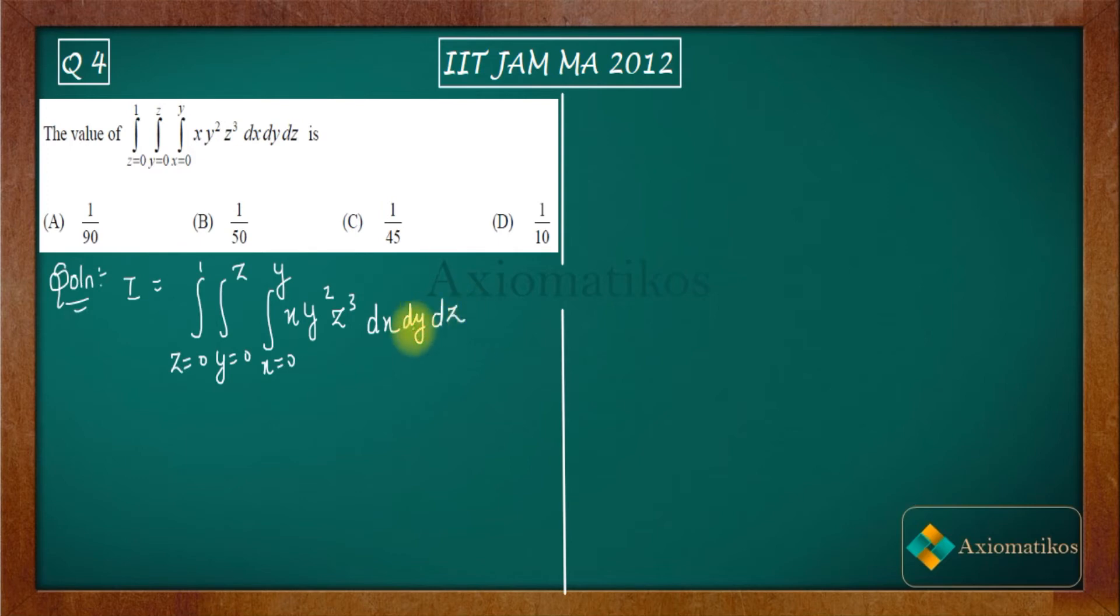That means for that time, the y and z variables will be constant. So what will be the integration of x? The integration will be x² over 2, and we have 0 to y dy dz, 0 to z, and 0 to 1.